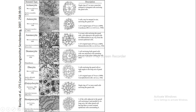Anomocytic means no specialized cell is surrounding the two guard cells. The cells surrounding the guard cells are similar to other epidermal or pavement cells, but five or more such cells enclose the guard cells without being differentiated in any way from normal epidermal cells.